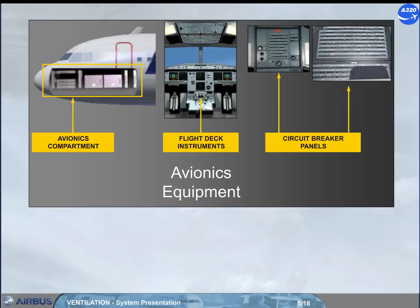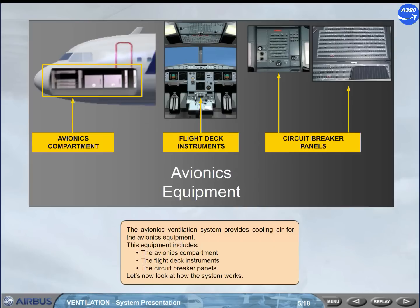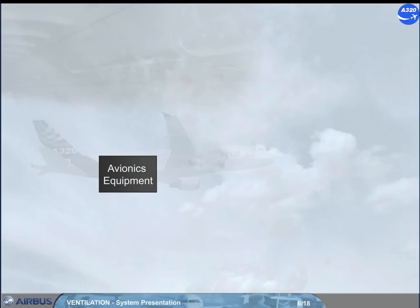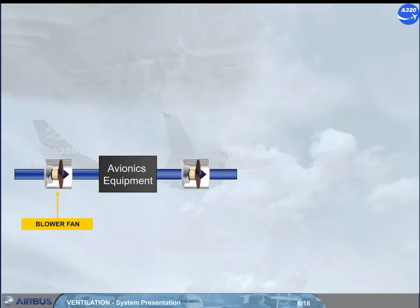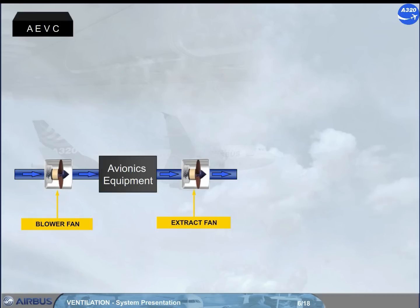Let's now look at how the system works. Air is circulated by two fans: a blower and an extract. These fans operate continuously as long as the aircraft electrical system is supplied. Note: the operation of the avionics ventilation system is controlled and monitored by an avionics equipment ventilation controller, AEVC.